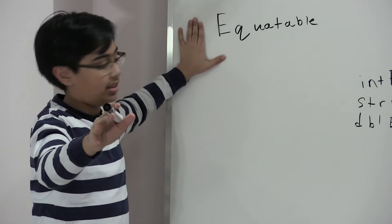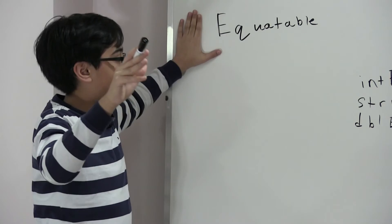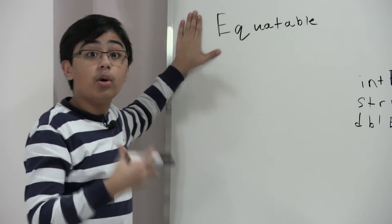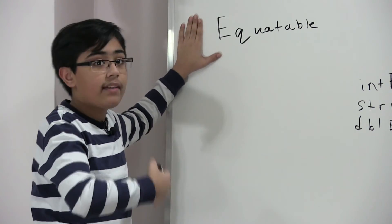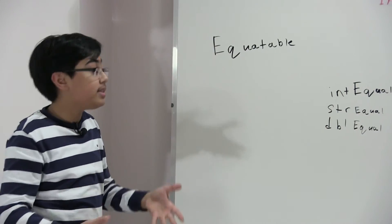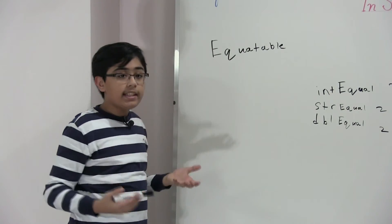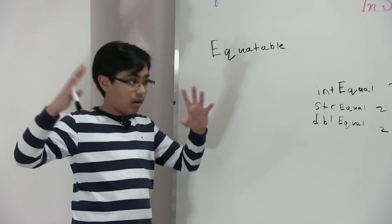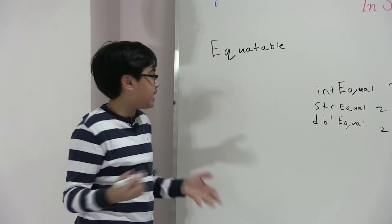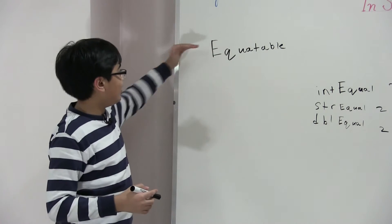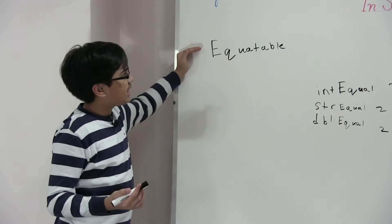By the way, equatable is a protocol not a class. It's a protocol which if other classes conform to, then they have to implement some methods and then there's a way to check if two of these types are equal as the name equatable says.